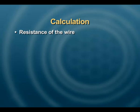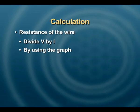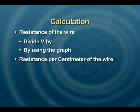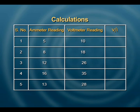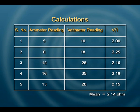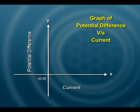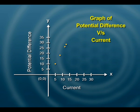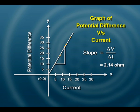Now we set out to do the calculations. The resistance of the wire can be found by two means: first by dividing the voltage value by the current, and second by using the slope of the V-I graph. By looking at the readings, the value of resistance comes out to be approximately the same. From the slope you can find the resistance, and from that also calculate resistance per centimeter using the length already taken.